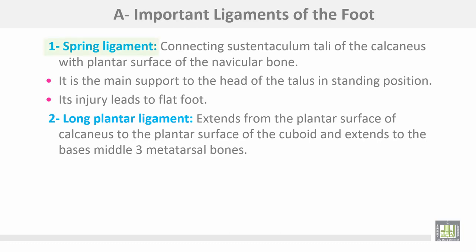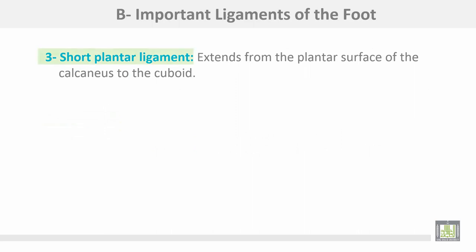Important ligaments of the foot. Number one, the spring ligament connects the sustentaculum tali of the calcaneus with the plantar surface of the navicular bone. It is the main support for the head of the talus in the standing position. Its injury leads to flat foot. The long plantar ligament extends from the plantar surface of the calcaneus to the plantar surface of the cuboid bone and extends to the bases of the middle three metatarsal bones. Number three, the short plantar ligament extends from the plantar surface of the calcaneus to the cuboid bone.